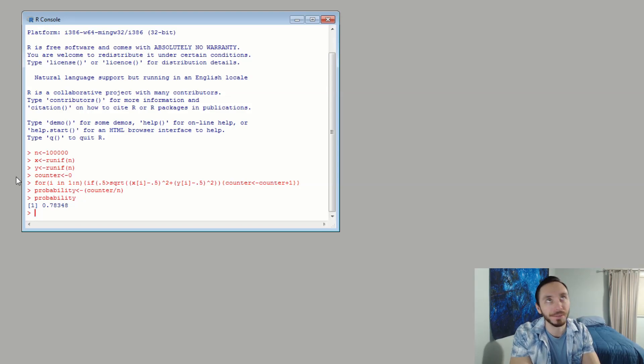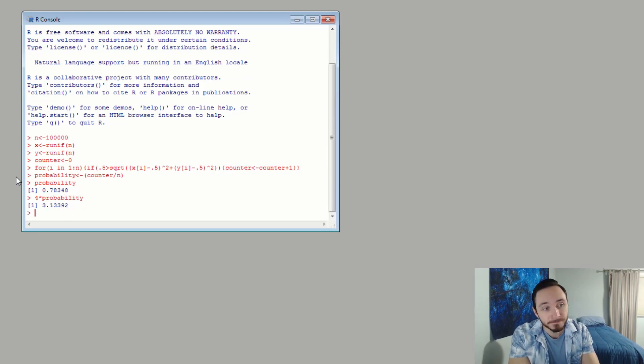We mentioned earlier that 0.8 was too high and 0.76 was too low. So we like this percent quite a bit. We're going to take four times the probability and that's pretty good.